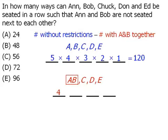Once 1 entity has been seated in the first chair, only 3 entities remain, so there are 3 ways to seat something in the second chair, and so on. So the total number of ways to seat all 4 entities will be the product, which is equal to 24. Now at this point it seems like we're done. However, we've only considered the possibility that Ann is seated to the left of Bob.